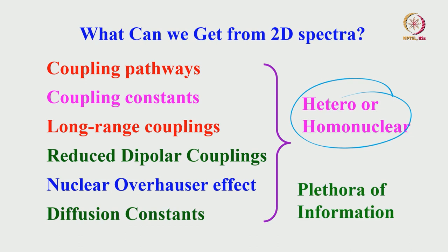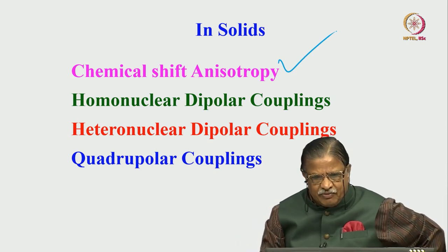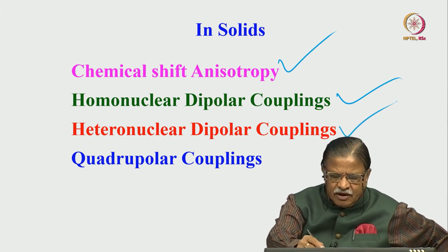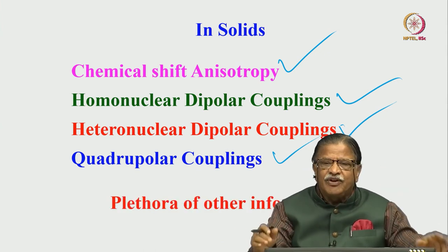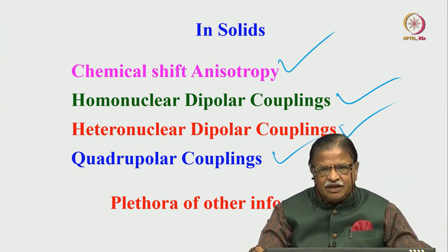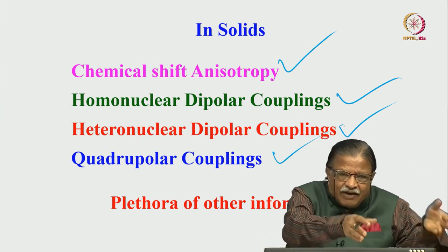All these things can be done in solution state and also solid state. Solution state NMR and solid state NMR are different. The type of spectra you get from solution state is different — we get sharp signals, much better than solid state, because in solid state there are additional parameters that have to be removed to get sharp peaks. But in solids also, 2D experiments can be carried out where we can get chemical shift anisotropy information, homonuclear dipolar couplings, heteronuclear dipolar couplings, quadrupolar couplings, etc.